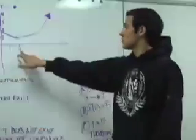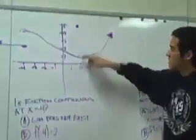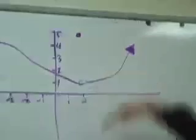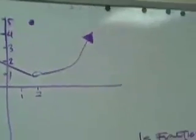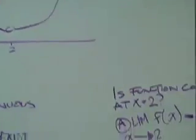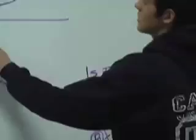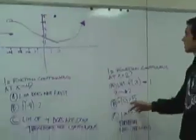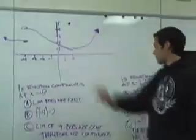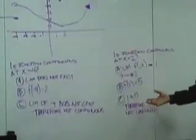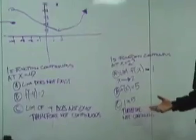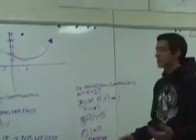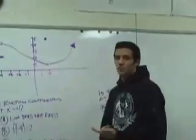Over here, there's a function continuous at x equals 2 — this point right here, this continuity right here. The limit here is 1, so plug in 2, you get 1. But f(2) equals 5 — you get 5 at this point. Just because there's a limit, that doesn't mean it's continuous, because we don't have a matching point there.